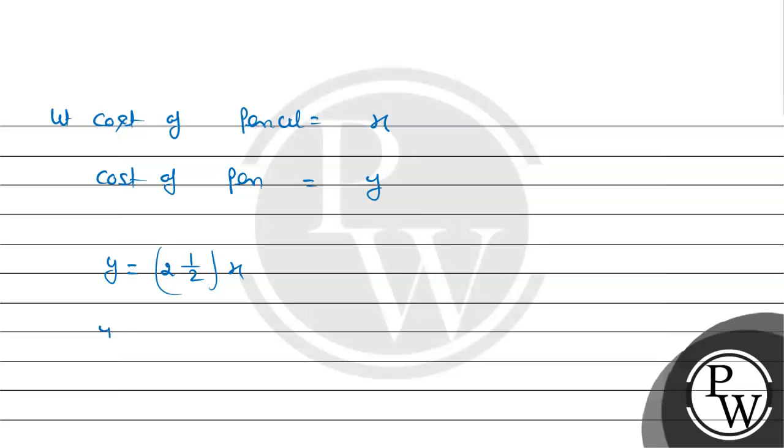So y equals 5x over 2. Simplifying, 2y equals 5x. Then 5x minus 2y equals 0. This is the final answer: 5x minus 2y equals 0.